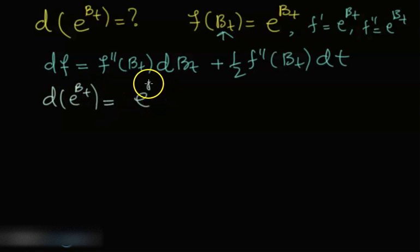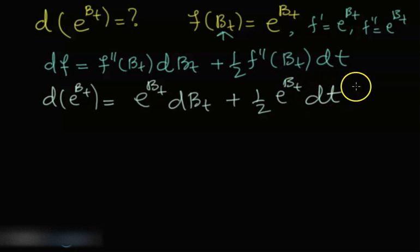equal to e to the B_t dB_t plus one half e to the B_t dt. So that's the differential.